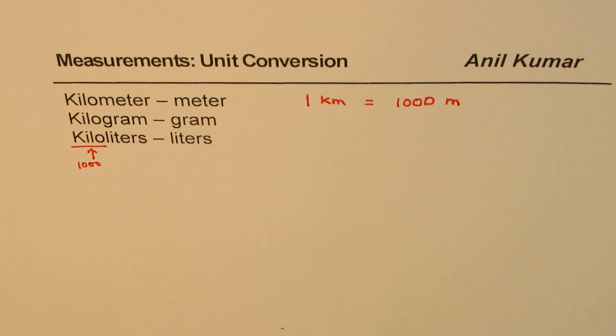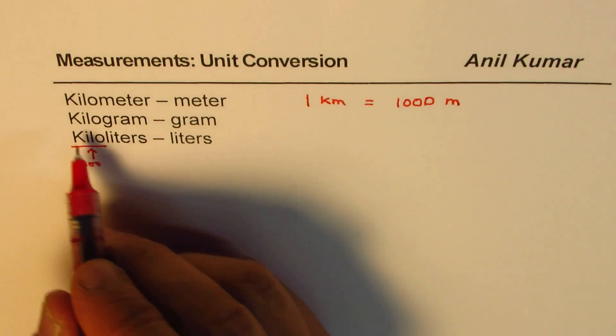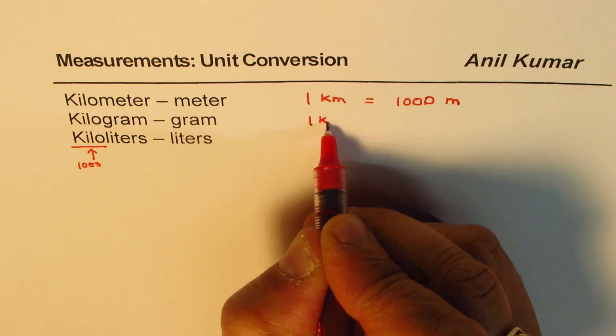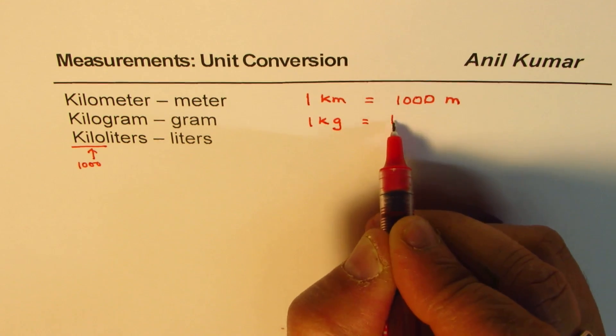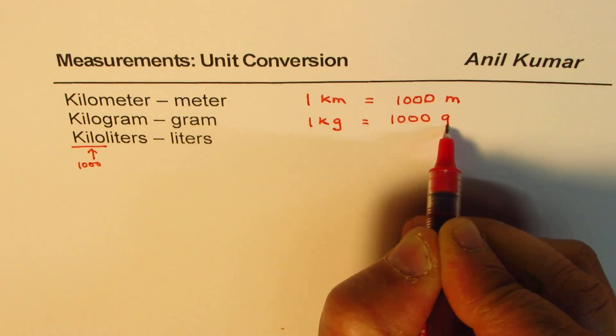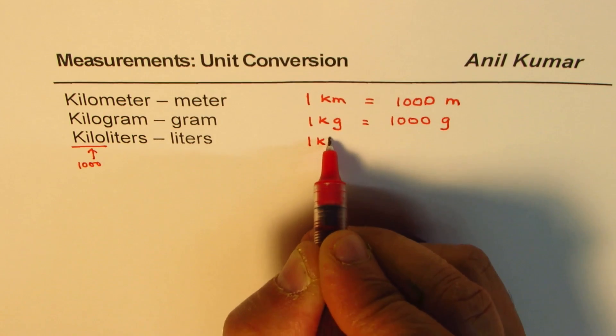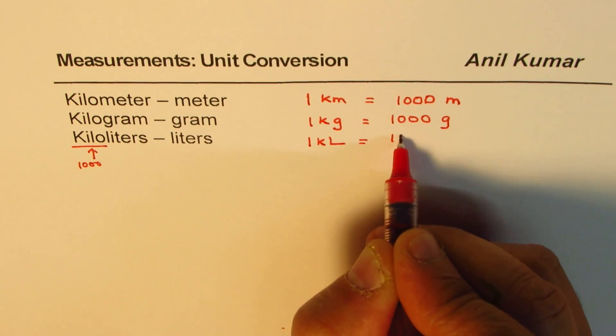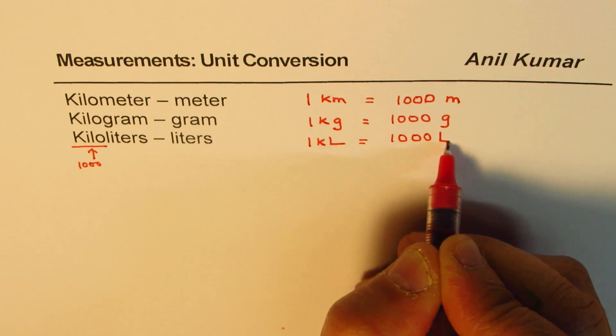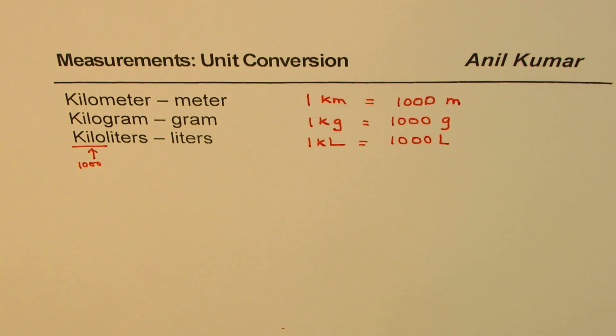So that is how you could easily remember. Now we have 1 kilogram equals 1000 grams. 1 kiloliter is 1000 liters. So that is the way you could easily convert kilometers to meters, kilograms to grams, kiloliters to liters.